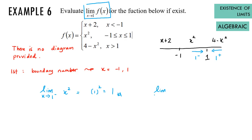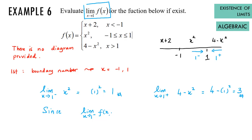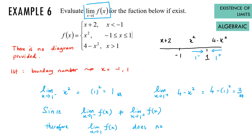Do not forget to write the proper notation for the left-side limit and right-side limit. After direct substitution, the left-side limit equals one and the right-side limit equals three. Since the left-side limit is not equal to the right-side limit, therefore the limit does not exist. From all the examples given here, I hope that you can understand how to find the existence of a limit.